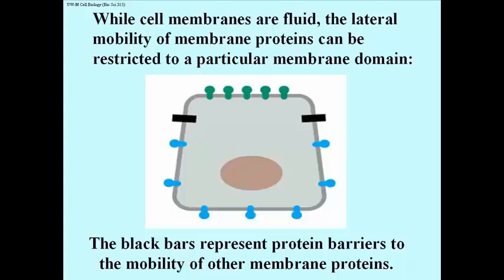In this cartoon, you see that all of the green proteins are above these black barriers and the blue ones below. Some of these black barrier proteins may, in fact, be a cell junction protein. Mainly, though, they are barriers to the mobility of proteins between domains. Proteins will move within the domain but not between them.